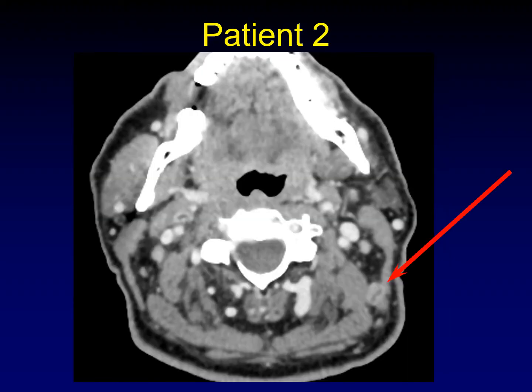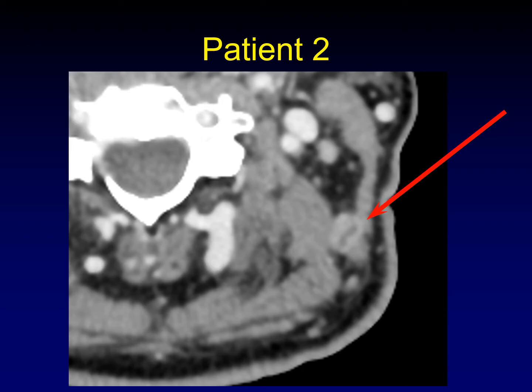Here's patient number two. I'm not going to test your eyes — I'm just going to point to the abnormality. And once again, I'll make it bigger so you can see it. There, another lymph node. Would you call this one metastatic disease?